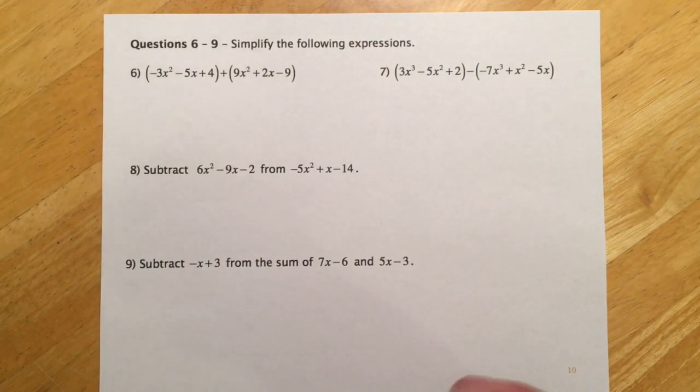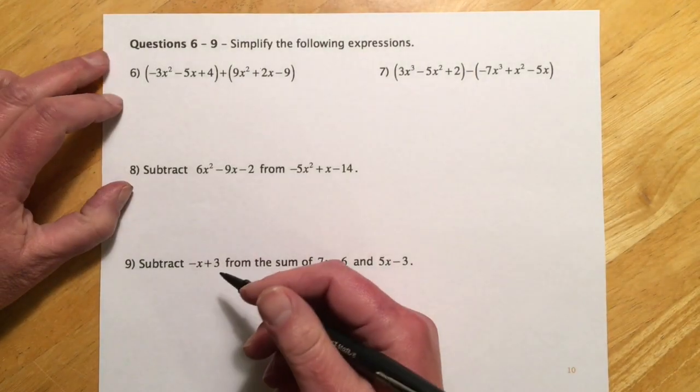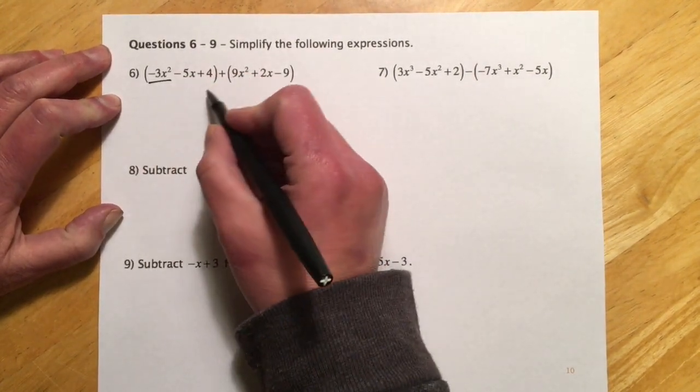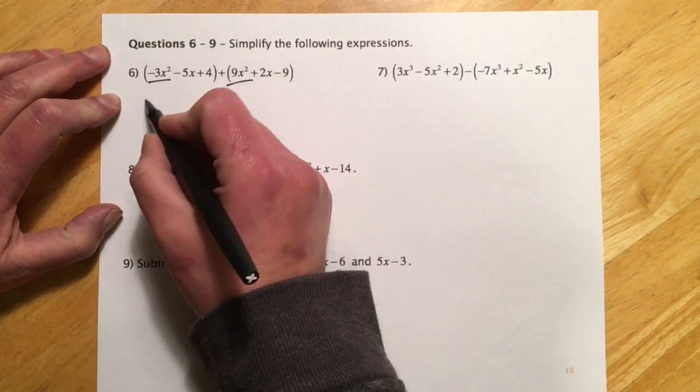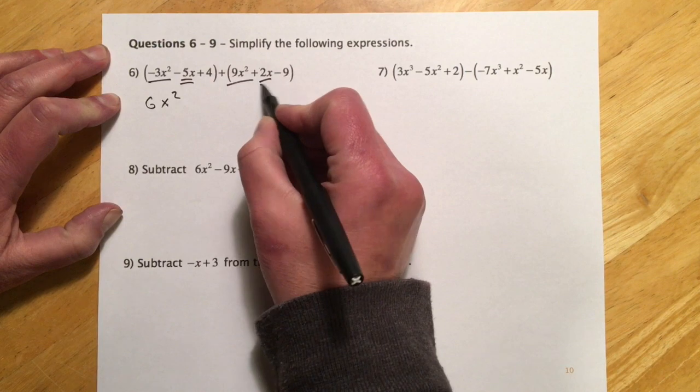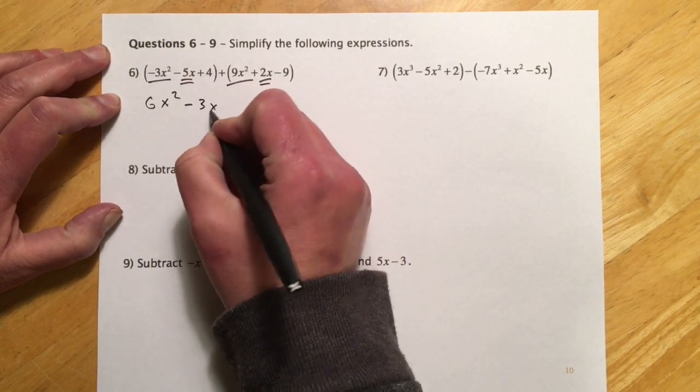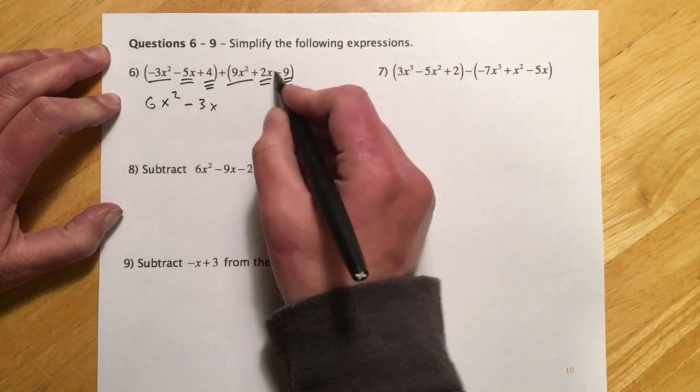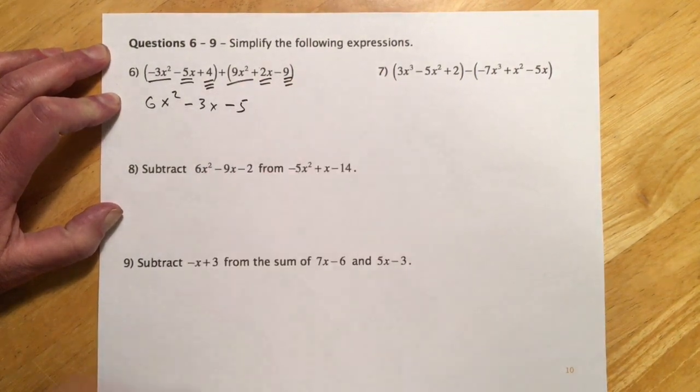Okay, and these next four of the ones are the match problems I'd have you try in class. So let's see, just like terms. So down 3x squared, and then up 9x squared, so I'd put us at 6x squared. Minus 5x plus 2x, so that'll be a minus 3x, and a plus 4, and a minus 9, so 4 minus 9 for negative 5.